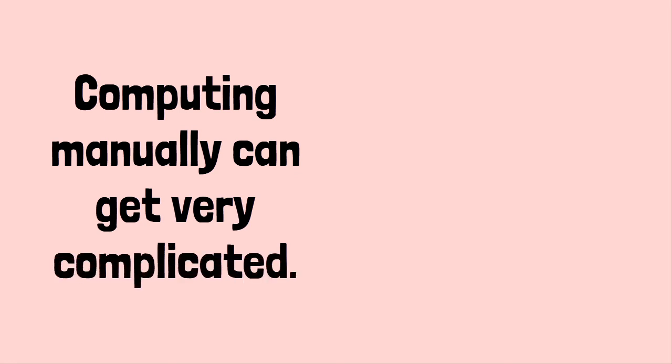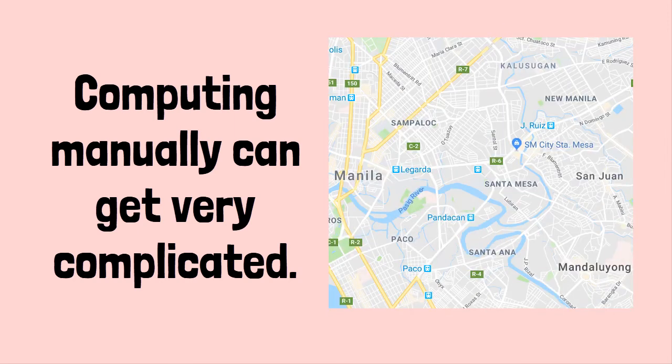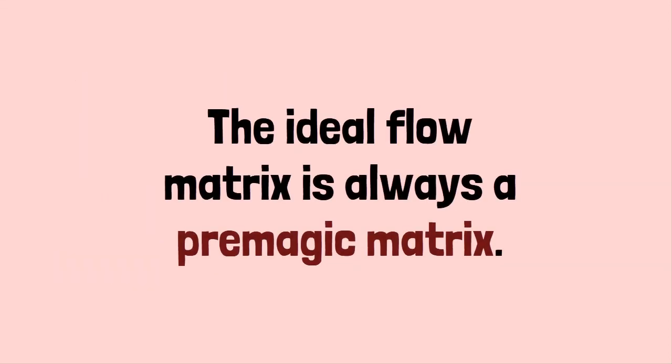So far, we've been computing everything manually. It can get very complicated, especially as real road networks have much more nodes and links. There's an easier way to deal with it. We're going to go on to our main theorem that the ideal flow matrix is always a P-magic matrix.